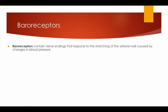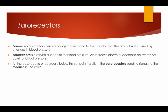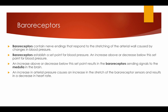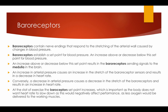Baroreceptors contain nerve endings that respond to the stretching of the arterial wall caused by changes in blood pressure. Baroreceptors establish a set point for blood pressure — an increase above or decrease below this set point results in the baroreceptors sending signals to the medulla in the brain. An increase in aortic pressure causes an increase in the stretch of the baroreceptors and results in a decrease in heart rate. Conversely, a decrease in aortic pressure causes a decrease in the stretch and results in an increase in heart rate. At the start of exercise, the baroreceptors' set point increases, which is important as the body does not want the heart rate to slow down, as less oxygen would be delivered to the working muscles.